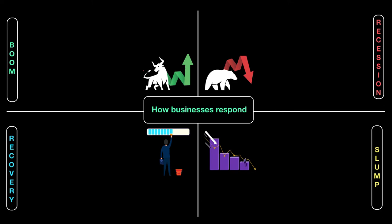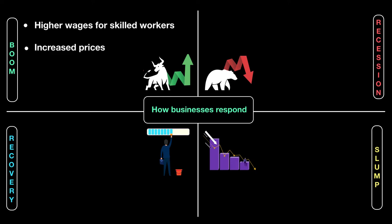During a boom, things are good — the country is expanding, GDP is on the rise, and that spells good luck for businesses. There's more income across the country, more people are happy to spend, more employment opportunities, more businesses opening, and more choices available. The demand for labor increases, and skilled workers are able to maximize their reward, so wage levels generally go up. This means higher costs for businesses, but since people have more income, businesses can also increase their prices to offset those wage increases.